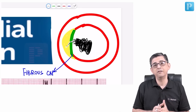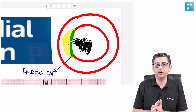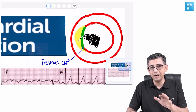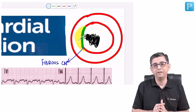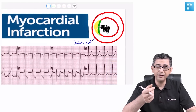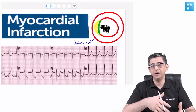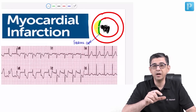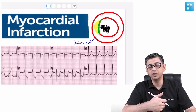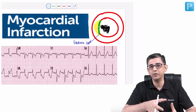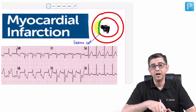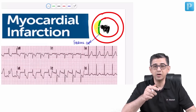MI comes in two varieties: ST elevation MI and non-ST elevation MI. The reason for this classification is that in ST elevation MI, the clot is rich in fibrin and RBCs. Because the clot is fibrin-rich, fibrinolytic drugs like streptokinase, alteplase, reteplase, and tenecteplase will work effectively. This is an important insight from a treatment perspective.